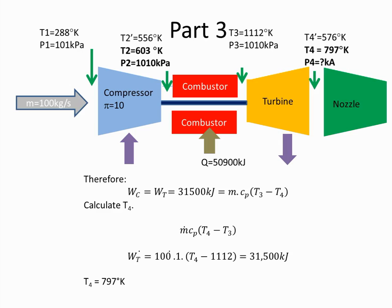So to do that, first of all we are going to say that the work done in the compressor must be equal to the work done in the turbine. So we set the value of the work done in the turbine equal to the work done in the compressor. And in part 2 we saw that the work done in the compressor was 31,500 kJ. So therefore T4 can be calculated because we know what the mass is, we know what CP is, we know what T3 is. And doing all of that we will work out T4 to be 797 degrees Kelvin.